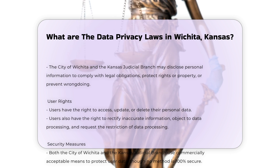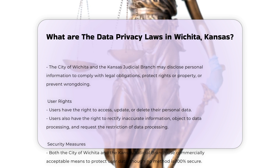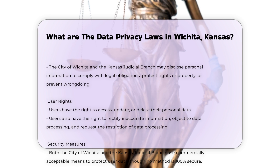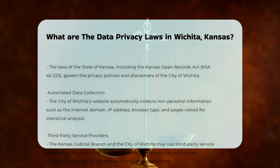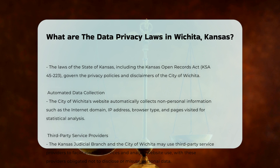The City of Wichita and the Kansas Judicial Branch may disclose personal information in certain circumstances, such as to comply with legal obligations, protect rights or property, or prevent wrongdoing. These disclosures are made in good faith and in accordance with applicable laws. Users have various rights under these policies, including the right to access, update, or delete their personal data.